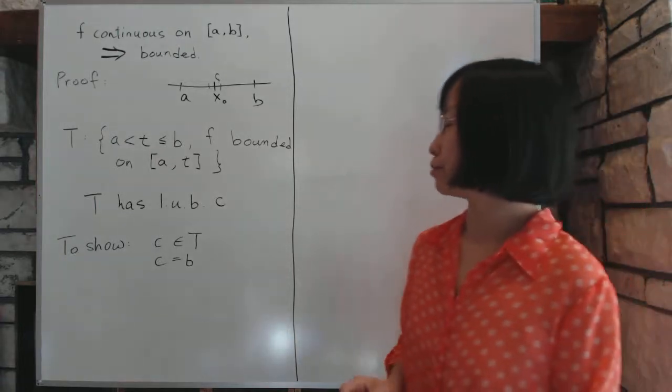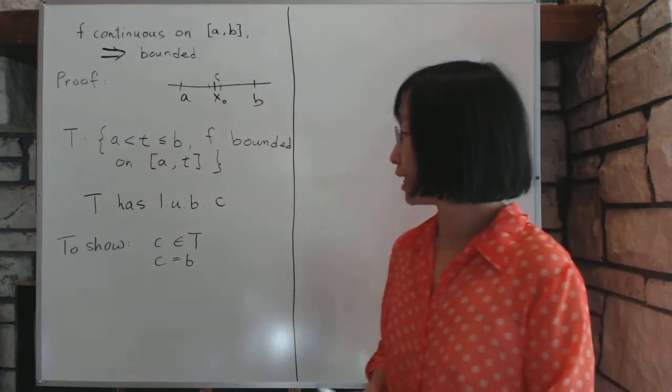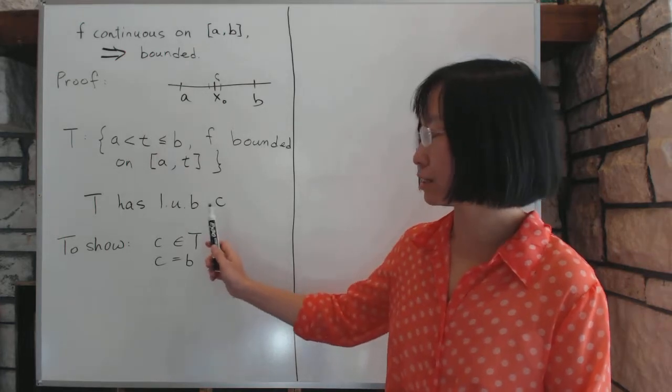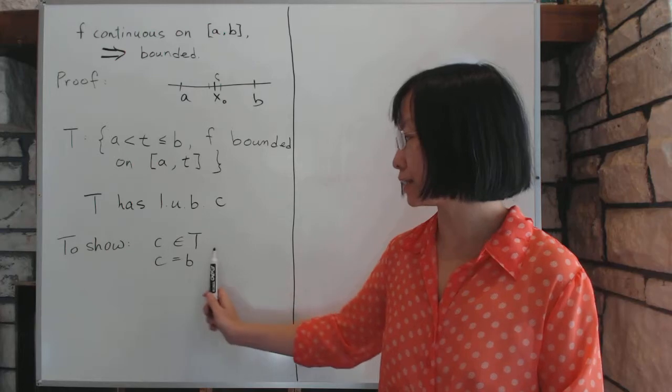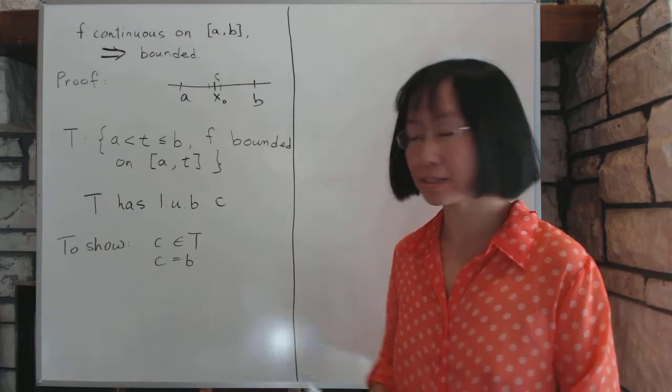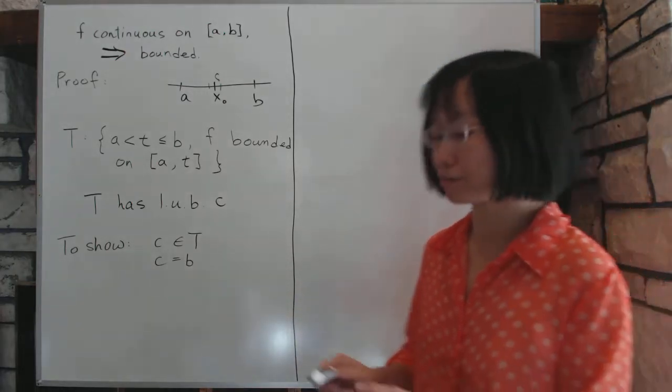Now, let's continue with our proof. We have right now shown that C is the least upper bound of the set T. We have to show that C is actually an element of T, and C equals to B. And that will conclude our proof.